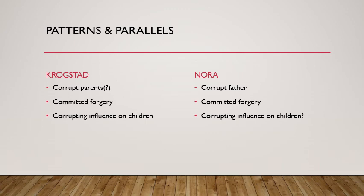There's also a parallel between Krogstad and Nora. Torvald claims Krogstad had corrupt parents who made him who he is, and we learn Nora's father was also suspected of corruption and bad with money. Both committed forgery, though Nora claims to have done it for a good reason — to help her husband — while Krogstad's motivations are less clear. And while Torvald says Krogstad has a corrupting influence on his children, hearing this triggers Nora: she fears she too might have a corrupting influence on her own children because of her secrets and crimes.